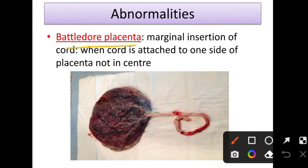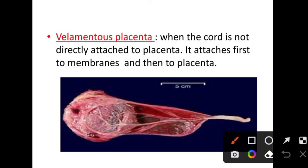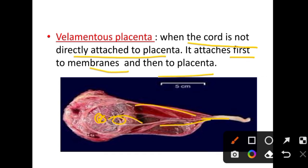Abnormalities related to cord insertion: first is battledore placenta, where the umbilical cord is attached to the margin of the placenta — marginal insertion — rather than the center. Next is velamentous insertion, where the cord is not directly attached to the placenta; instead it attaches first to the membrane and then travels to the placenta.